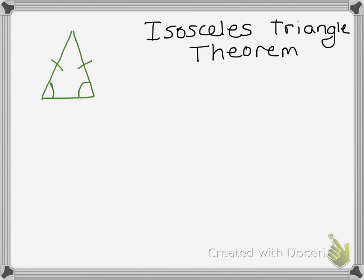So if you look at the picture that I have on the screen, these two sides are the same because this is an isosceles triangle. But what you may not have known is that the angles across from those sides are also the same.